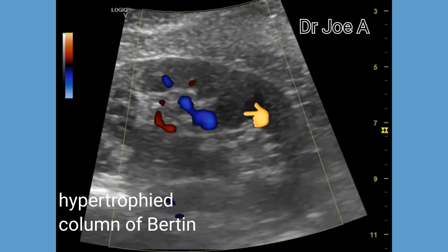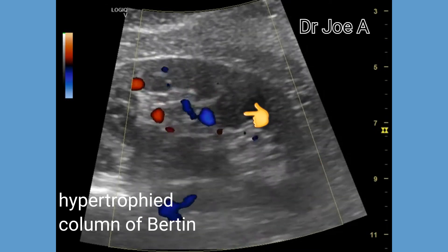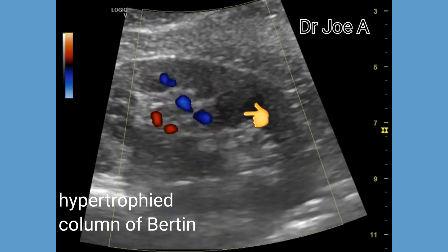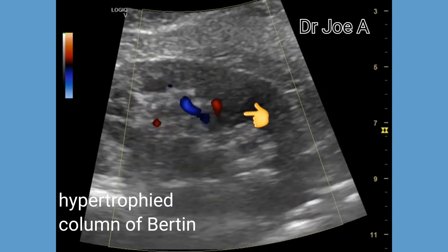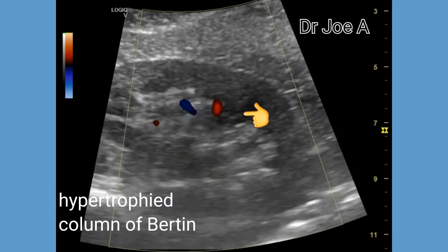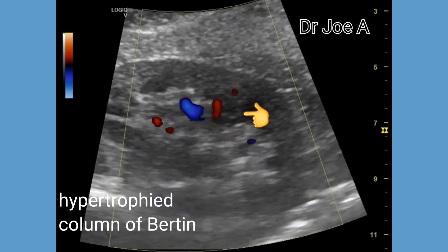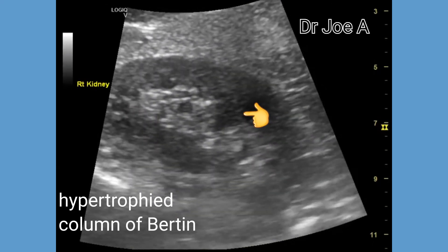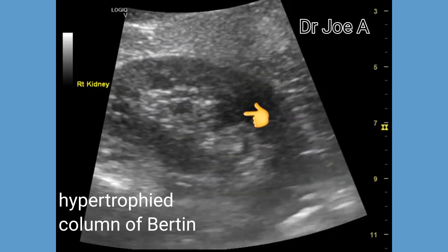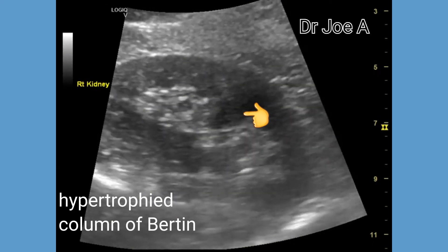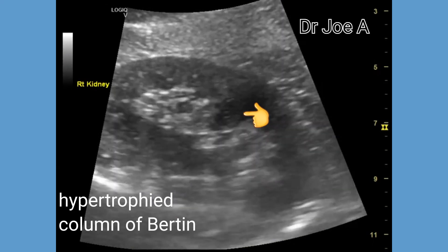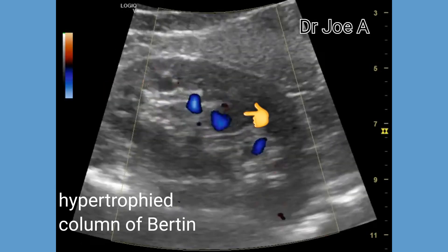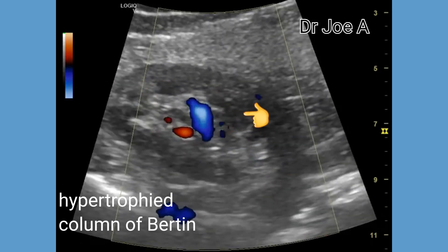Only in rare cases do we need MRI or CT investigation to confirm this diagnosis. The bulge or protrusion into the renal sinus is the hallmark in the diagnosis of a hypertrophied column of Bertin.